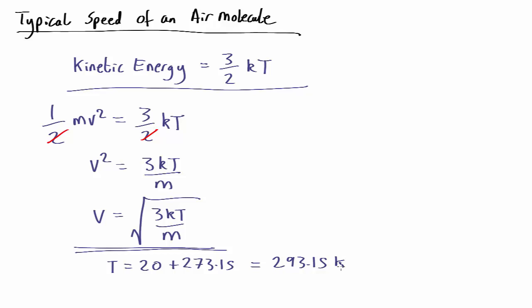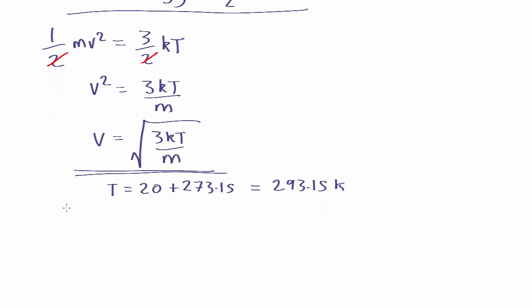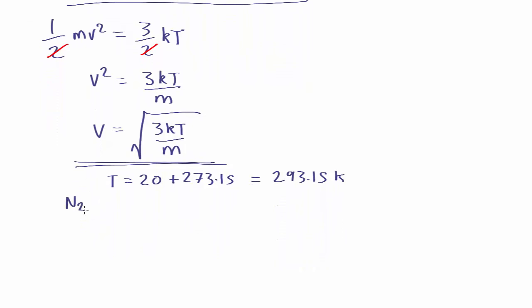But how about the mass? Well, air is mostly nitrogen, and nitrogen is diatomic, so it's two nitrogen atoms combined. Now, a nitrogen atom has an atomic mass of 14.